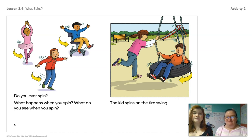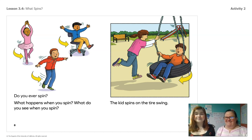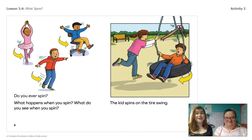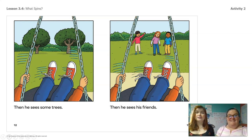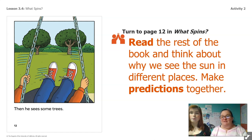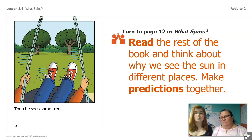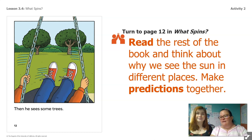Do you ever spin? What happens when you spin? What do you see when you spin? The kid spins on the tire swing. The spinning kid sees a bench, then he sees a slide, then he sees some trees, then he sees his friends. Rosie and I are going to read the rest of this book to you. I want you guys to be thinking about your predictions about how this book is going to help us answer the question about why the sun looks like it's in different places.